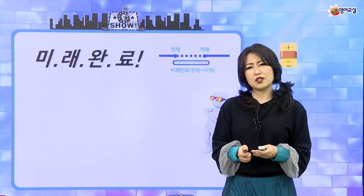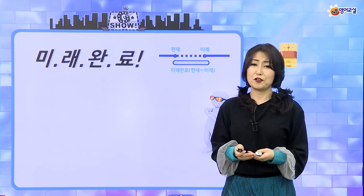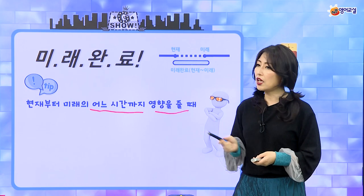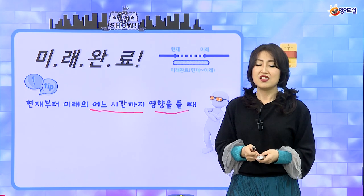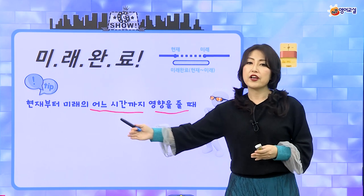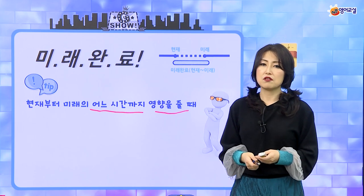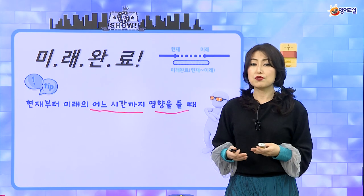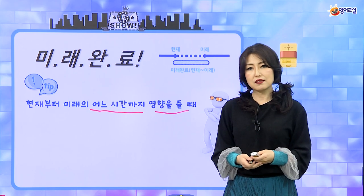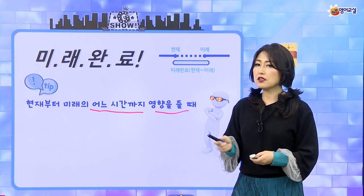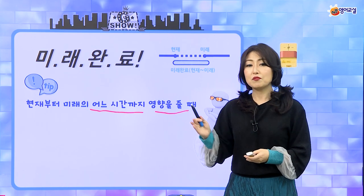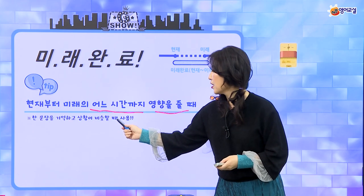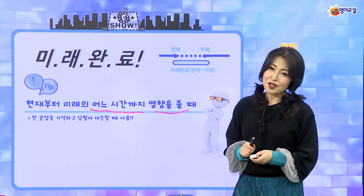미래 완료 해볼게요. 미래 완료도 사실 과거 완료랑 크게 다르지 않아요. 미래 완료는 어떤 뜻이냐면 현재부터 미래에 어느 시간까지 영향을 줄 때 사용해요. 지금 내가 하는 일이 미래에 어느 시간까지 쭉 영향이 가는 것들에 미래 완료 시제를 사용하죠. 특별한 경우에는 자주 사용하지만 일반적으로 현재 완료처럼 많이 쓰이지는 않아요. 형식을 알아두면 '이것은 미래 완료구나, 이 일은 미래에 완료가 되는 시점이 있겠구나' 라고 짐작할 수 있으니까요.